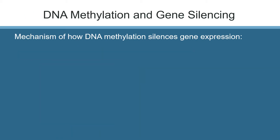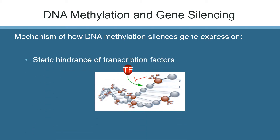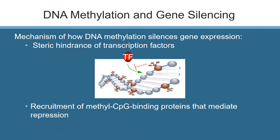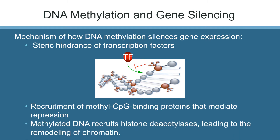How does methylation silence genes? One hypothesis is that the methyl group disrupts the minor groove of DNA and sterically hinders transcription factor binding — but this is only true for some, not all, transcription factors. More often, methylation recruits DNA binding proteins that mediate repression of genes. These binding proteins appear to recruit histone deacetylases, leading to the remodeling of chromatin.